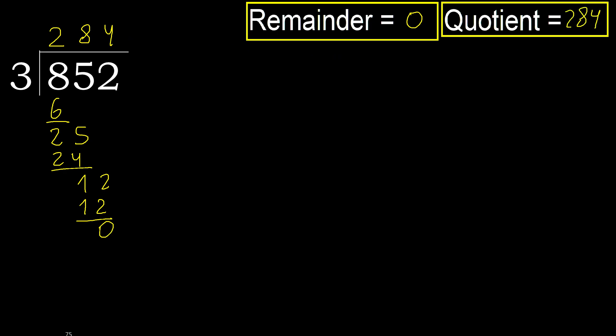Ok. Remainder is 0. Therefore, 852 divided by 3 is 284.